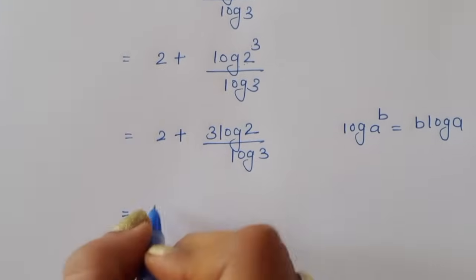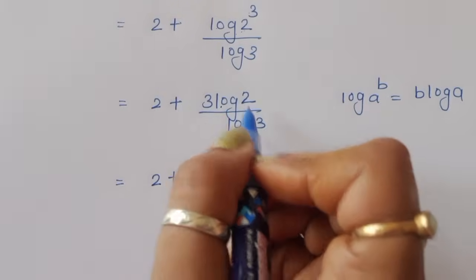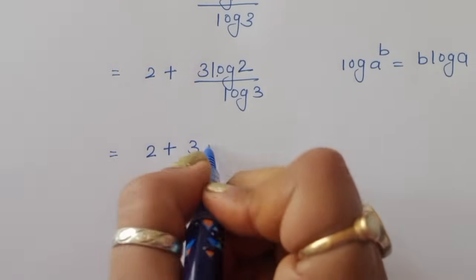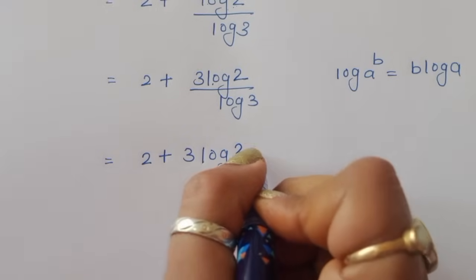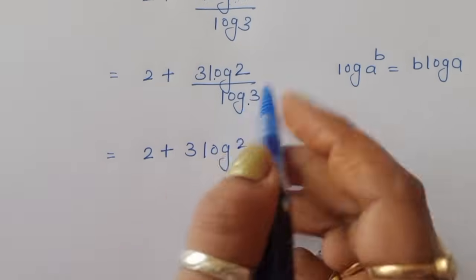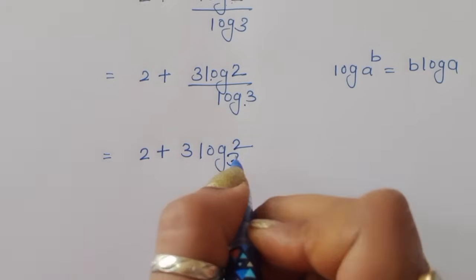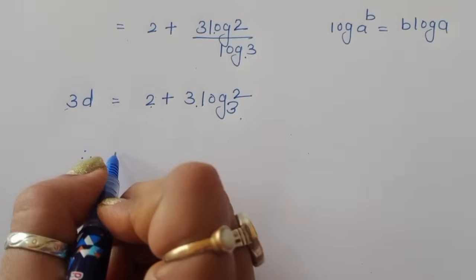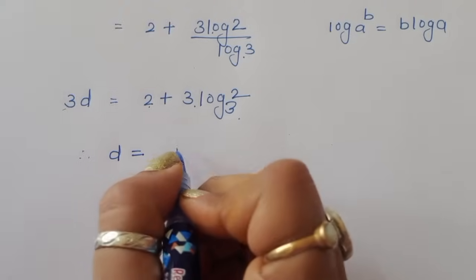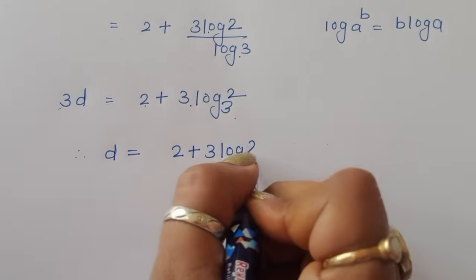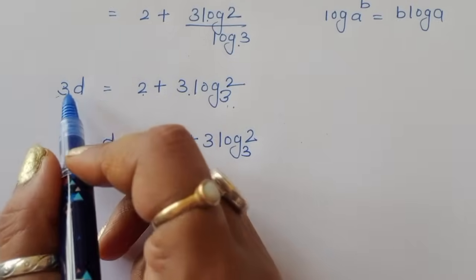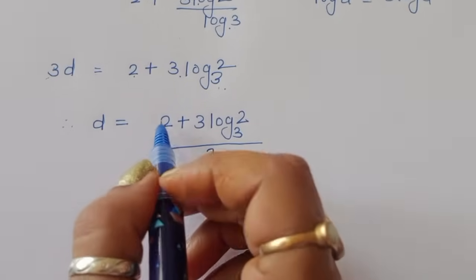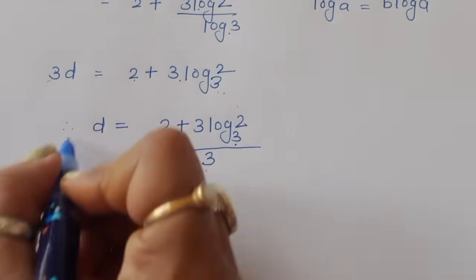So 3d is equal to 2 plus 3 log of 2 divided by log of 3, which we can write as 2 plus 3 log of 2 to the base 3. Therefore 3d equals 2 plus 3 log of 2 to the base 3. Dividing both sides by 3, d is equal to 2 plus 3 log of 2 to the base 3, divided by 3. This is the value of d.